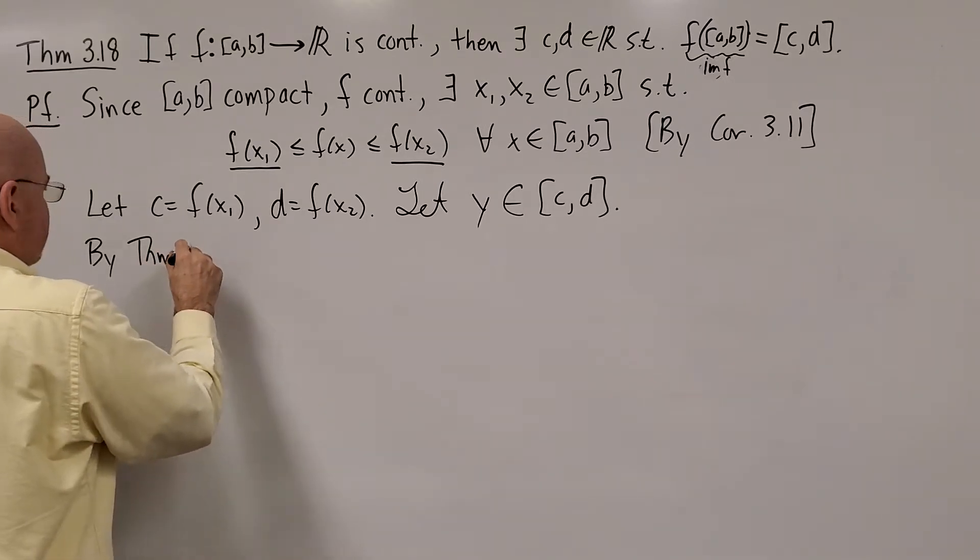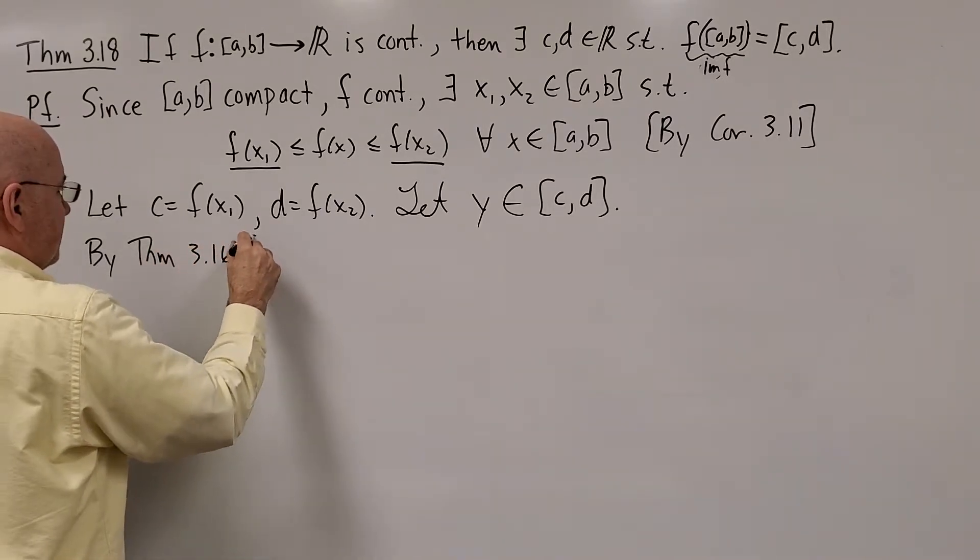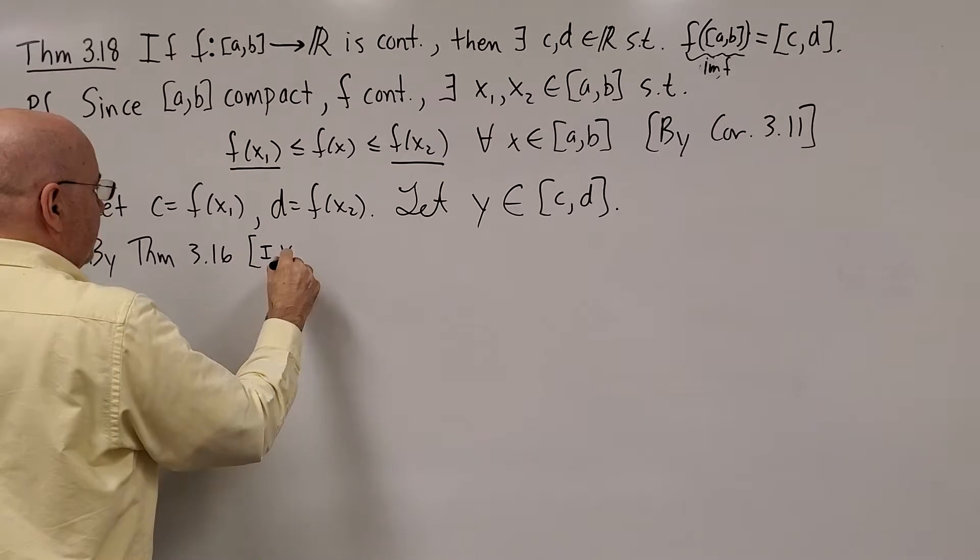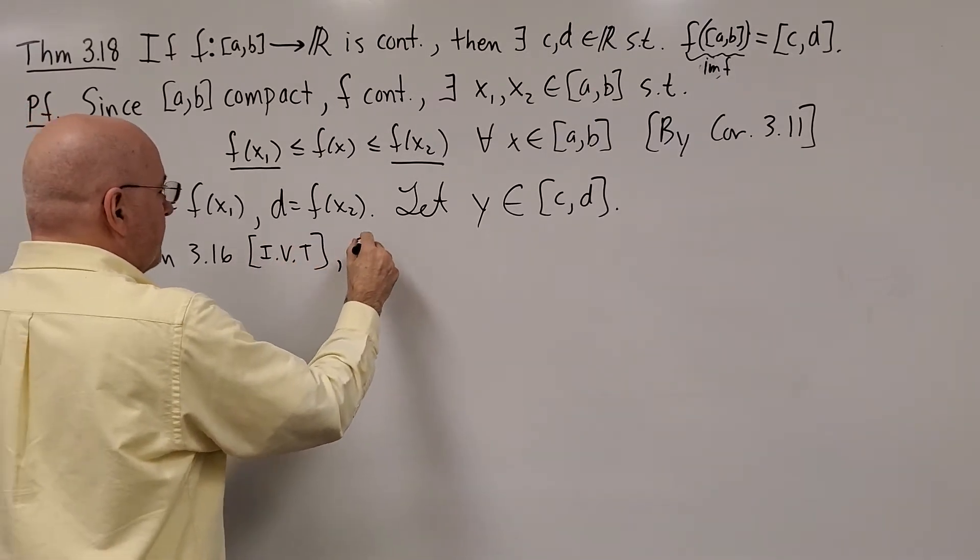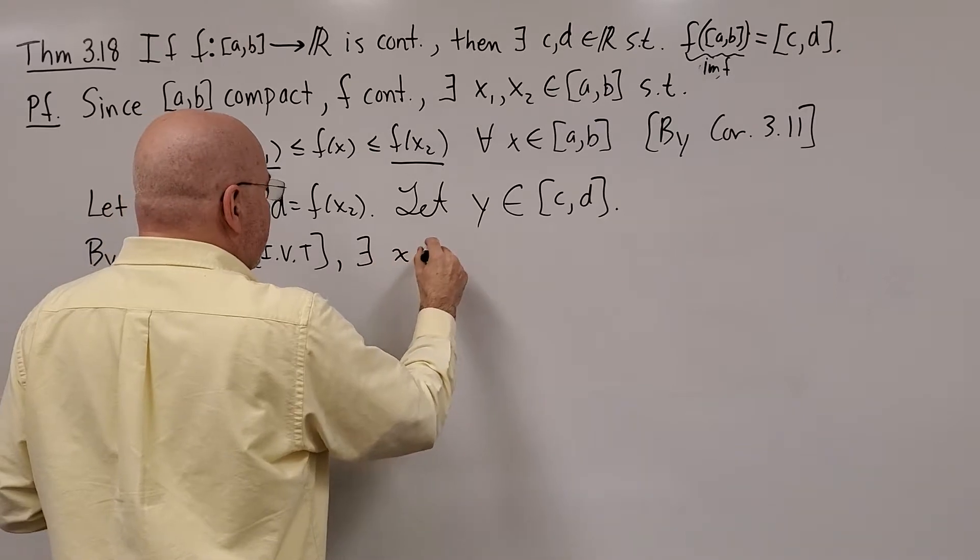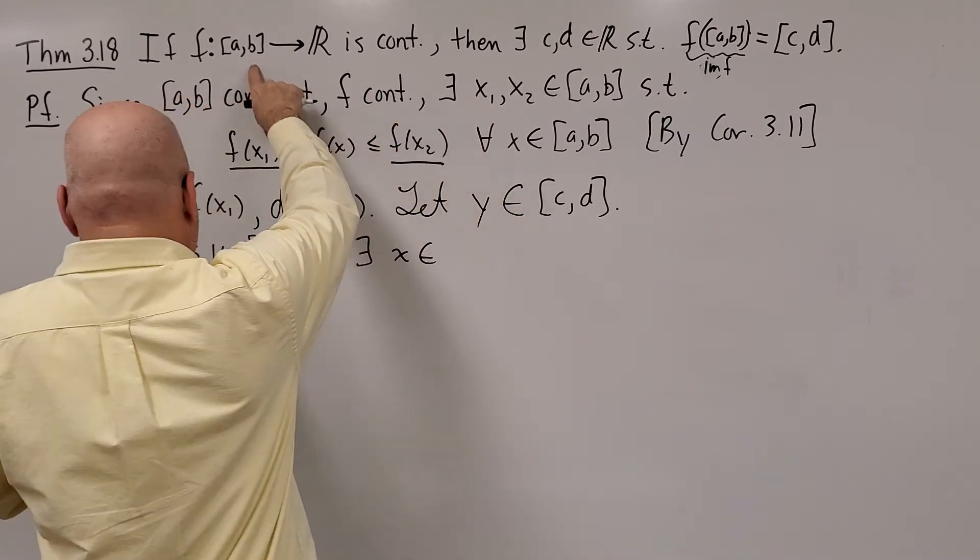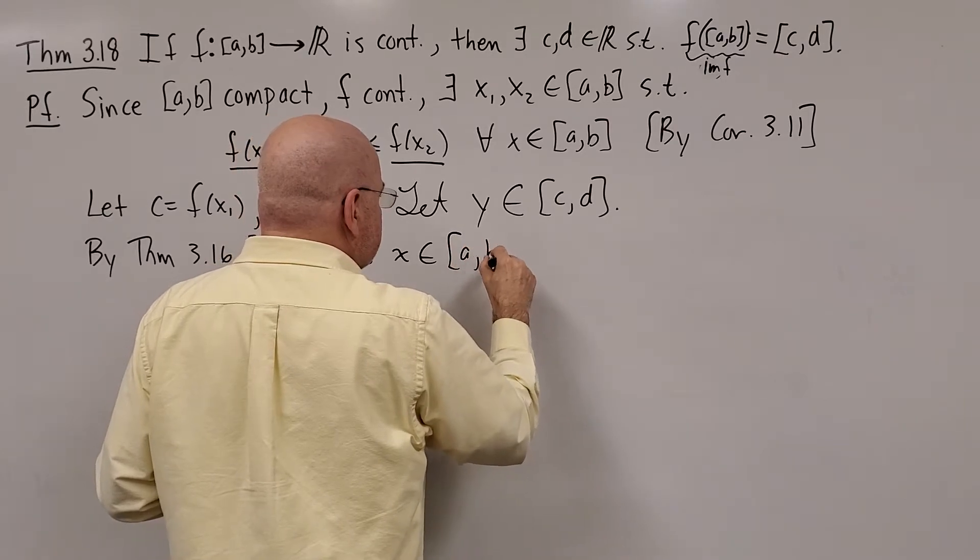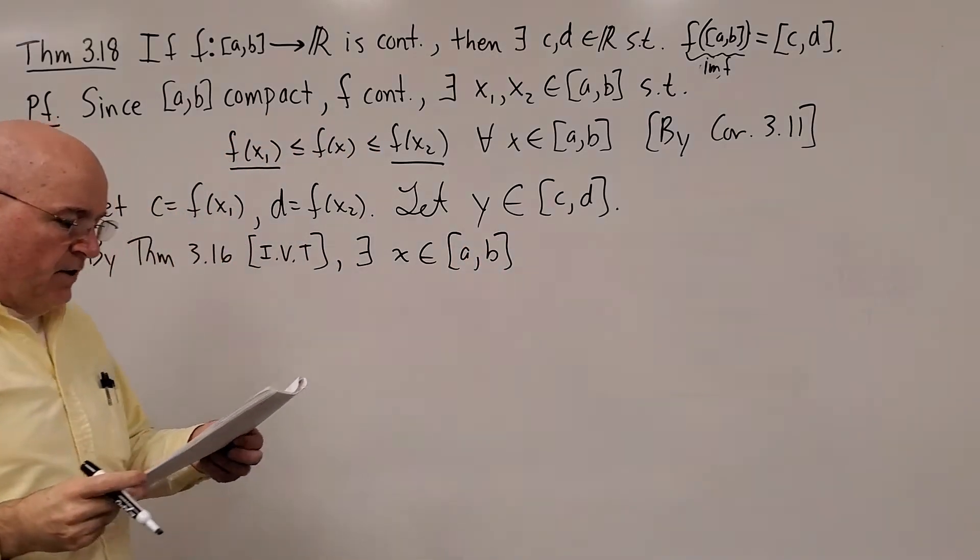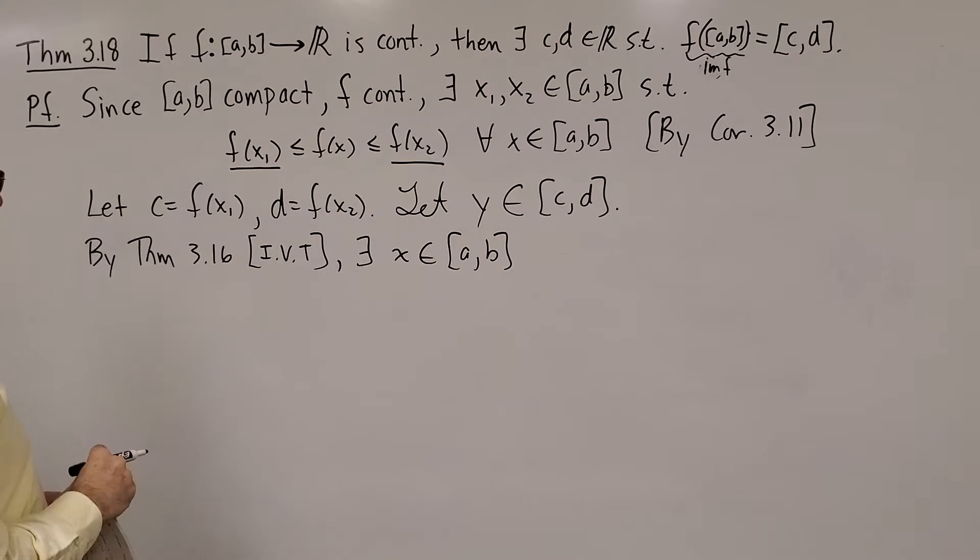By theorem 3.16, that's the intermediate value theorem, there exists an X in between A and B, it could be A or B, so it's in the closed interval [A,B] where F of X is equal to Y.